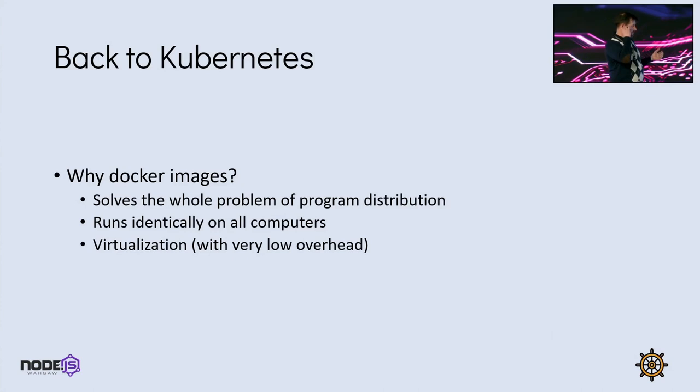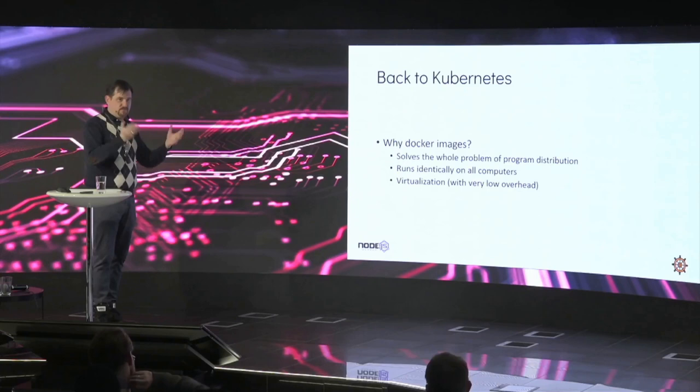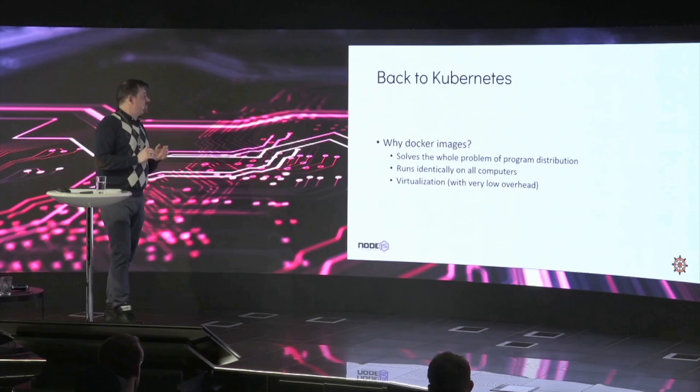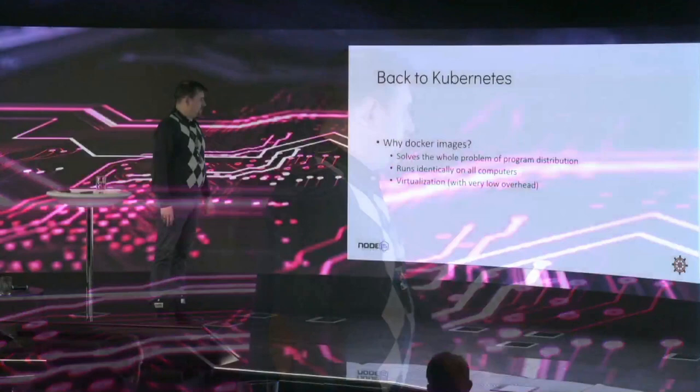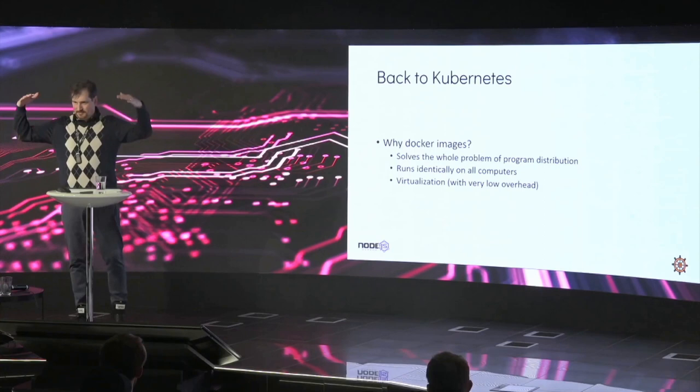Now we know enough about Docker for Kubernetes. Docker images solve the problem of program distribution — we just use those Docker image references, which are like a URL or email address, something unique to access that artifact. They run identically on all computers, which is great for a cluster of many computers. And virtualization means very low overhead — we're not firing up complete operating systems to run all our applications.